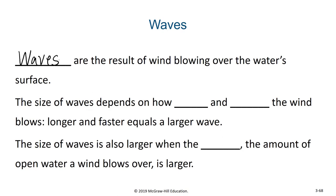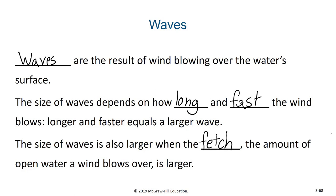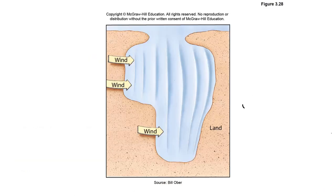Waves are the results of wind blowing over the water's surface. The size of the waves depends on how long and how fast the wind blows, with longer and faster winds creating a larger wave. The size of waves is also larger when the fetch, or the amount of open water, is large. The larger the area the wind can blow over, the larger the waves that will be produced.